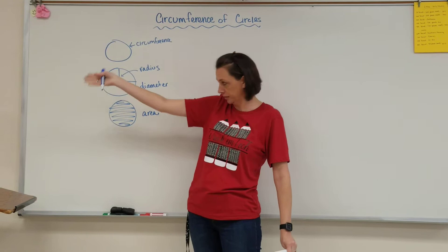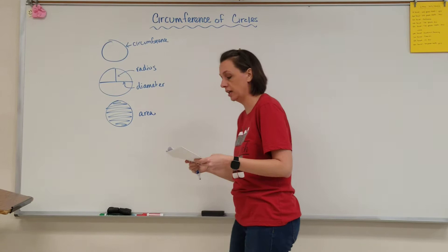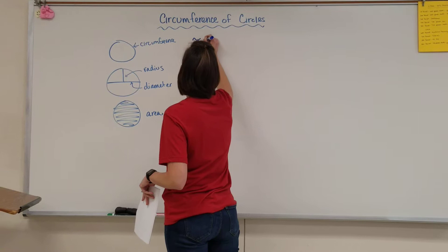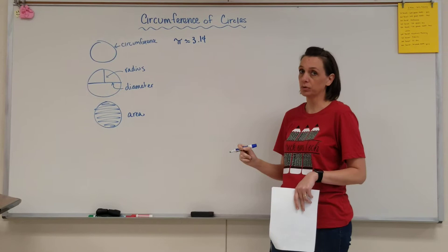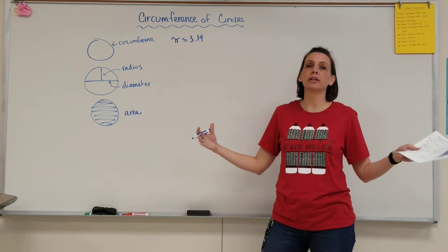When we're talking about area in a minute, we're talking about covering the entire inside of the circle. Also important to remember that for pi we're going to use 3.14. It gets a little squiggly because it's not equal to 3.14, it's approximately 3.14. Pi keeps going on forever and ever, never stopping, so we just use an approximation for it.